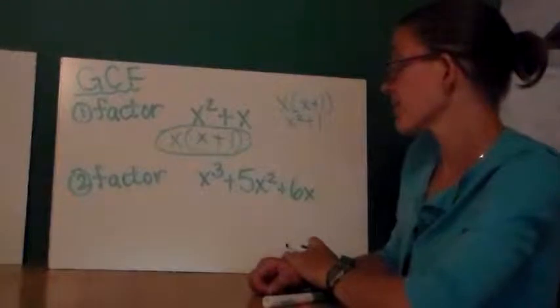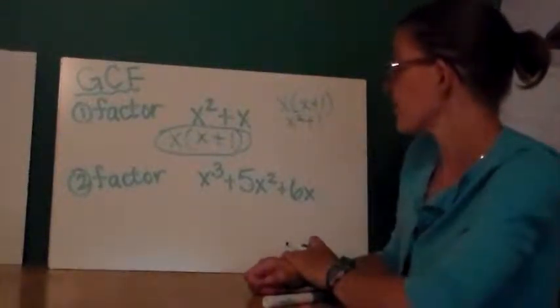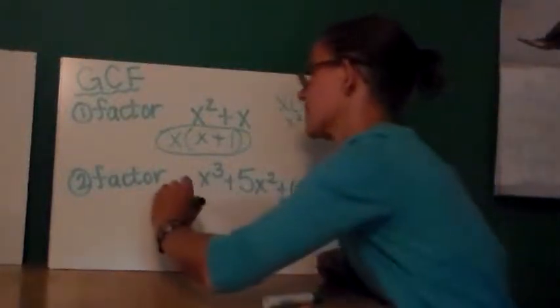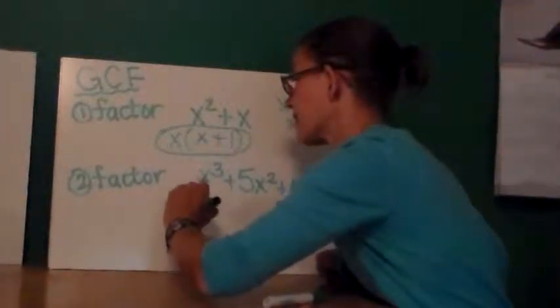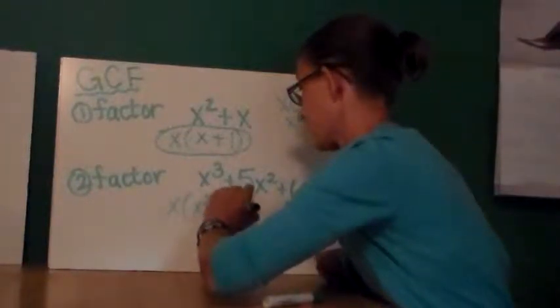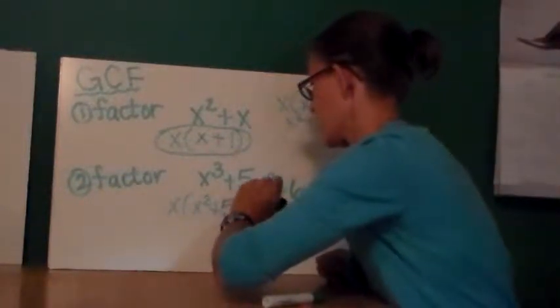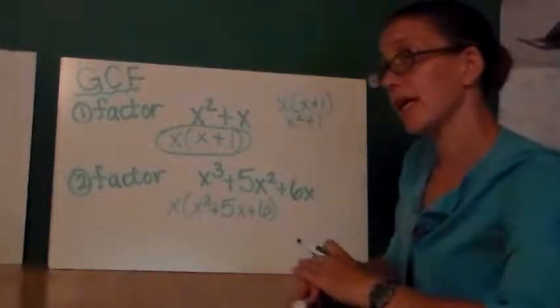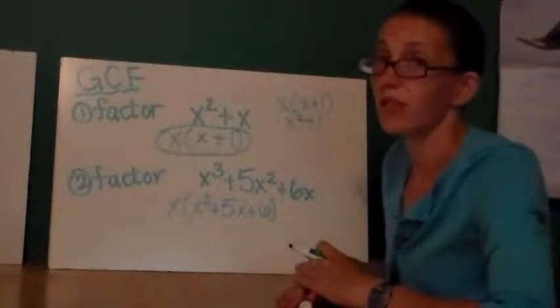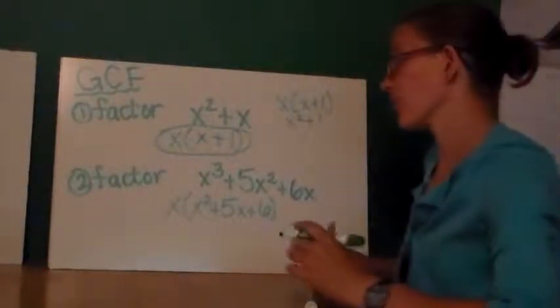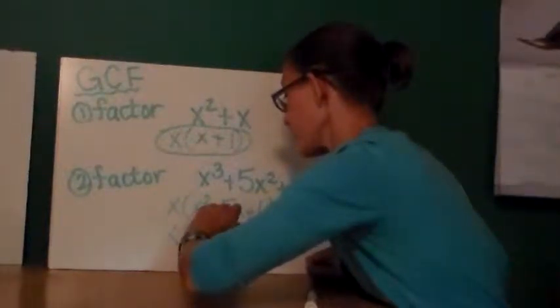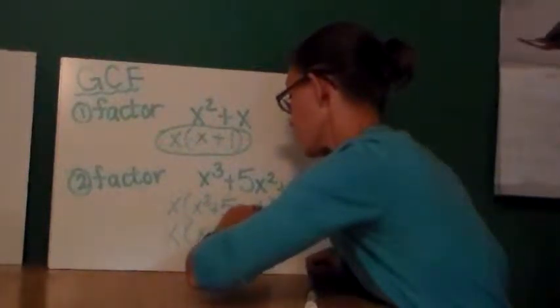In my second problem, I'm asked to factor x cubed plus 5x squared plus 6x. Again, I notice every term has an x in it. So I'll factor that out first. Well, now I have something in parentheses, a trinomial, that may look like the things you factored a lot of in Algebra 1. So this is something that's easier for me to factor, and I'll just factor that real quickly.